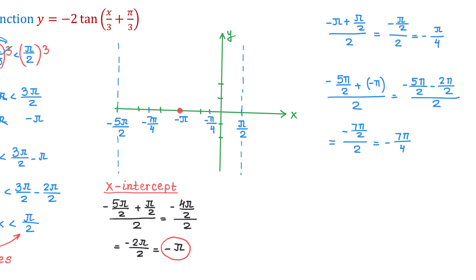At negative pi over 4, the value of the function is negative 2, so we plot that point. At negative 7 pi over 4, the value of the function is positive 2. We can verify using a calculator — replacing x with negative pi over 4 gives negative 2. Now let's connect the points: as we approach pi over 2, the function approaches negative infinity, and as we approach negative 5 pi over 2, the function approaches positive infinity.